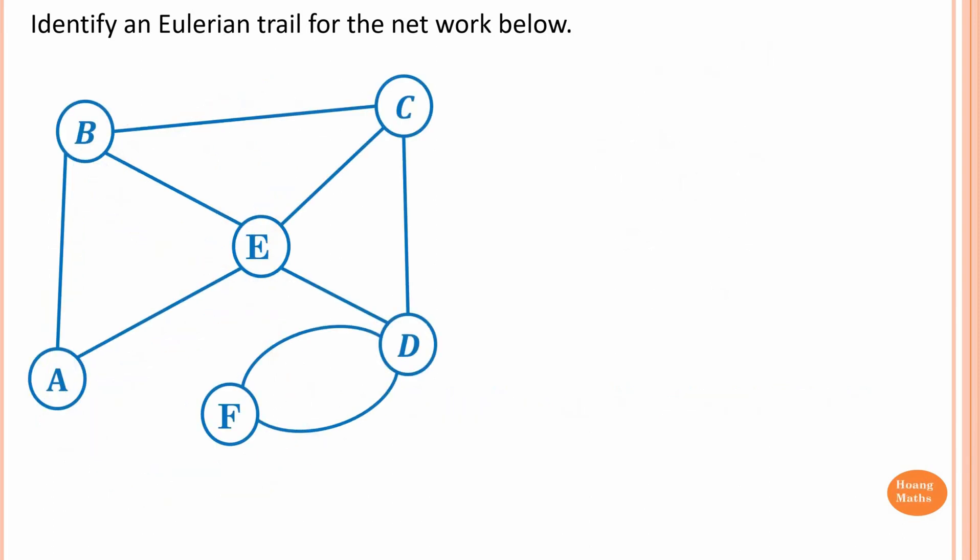Now, please stop the video and try this one yourself. Step 1: we need to work out whether an Eulerian trail exists in this network first.